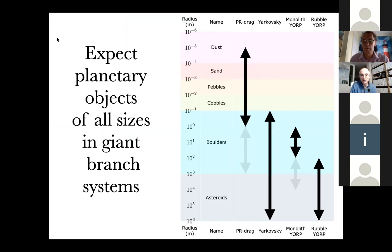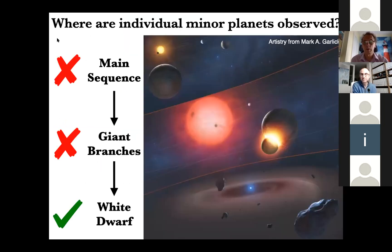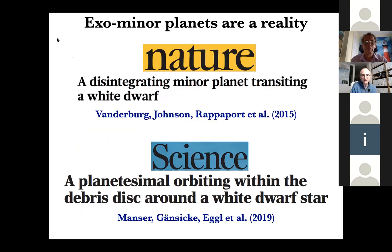We observe over 100 giant planets orbiting giant branch stars. But what about individual minor planets, such as asteroids? We can't observe those in main sequence systems, and we can't observe them in giant branch systems either. But we predict that minor planets will survive a star's entire main sequence lifetime, because we actually see these asteroids individually in white dwarf planetary systems. And if they exist in white dwarf planetary systems, then they were present during the giant branch phases. These exo-minor planets are a reality, and thinking about their evolution and potential breakup into dust during these giant branch phases is important.